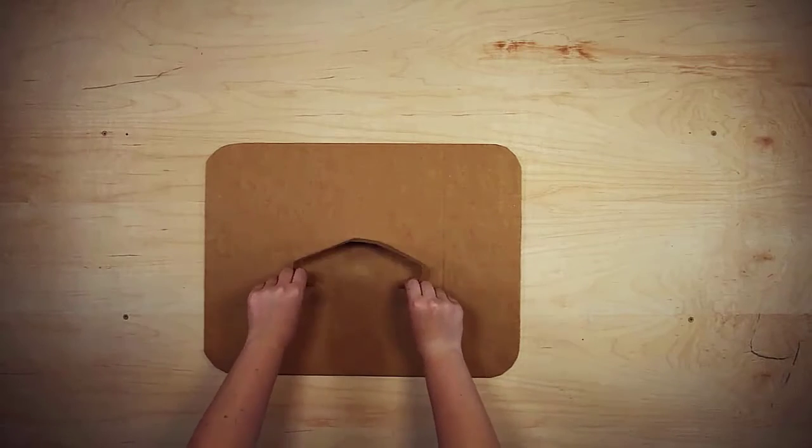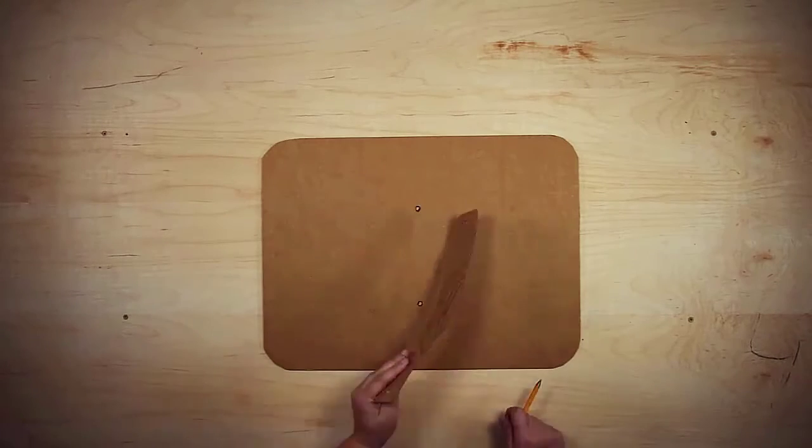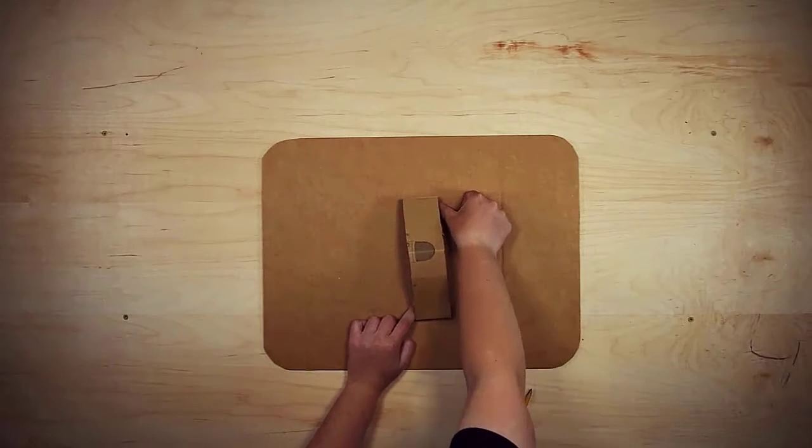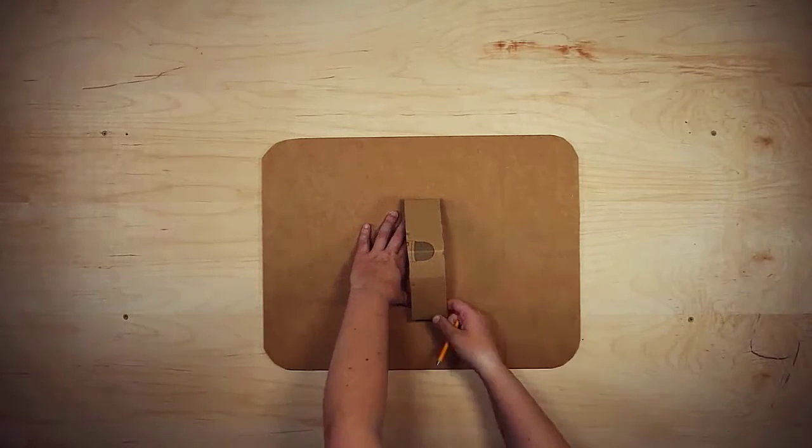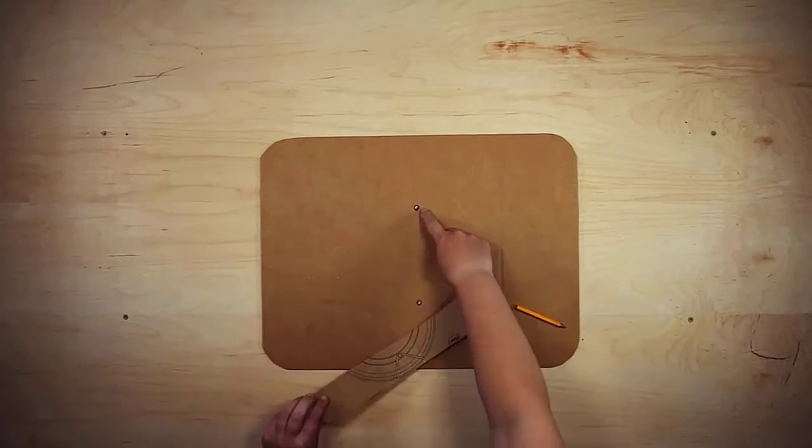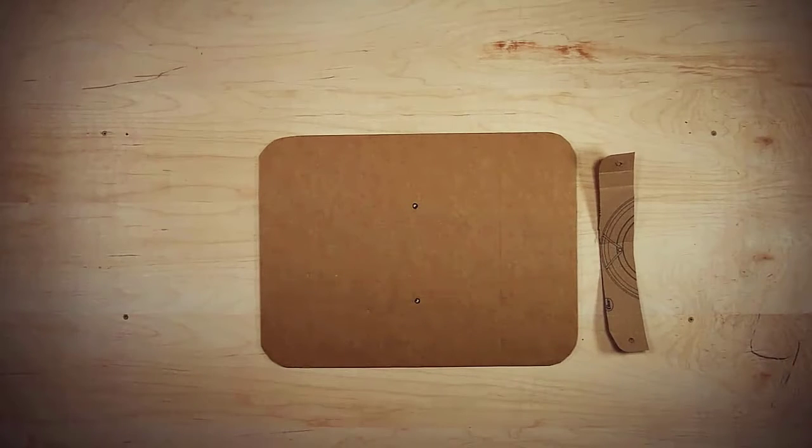Alright, so now we're going to do a pretty cool cardboard fastening trick that I learned. So off-camera I put two holes in the end of my handle and I'm going to line those on the shield and make some marks so that I can actually mark on the shield where I need to put in my holes.